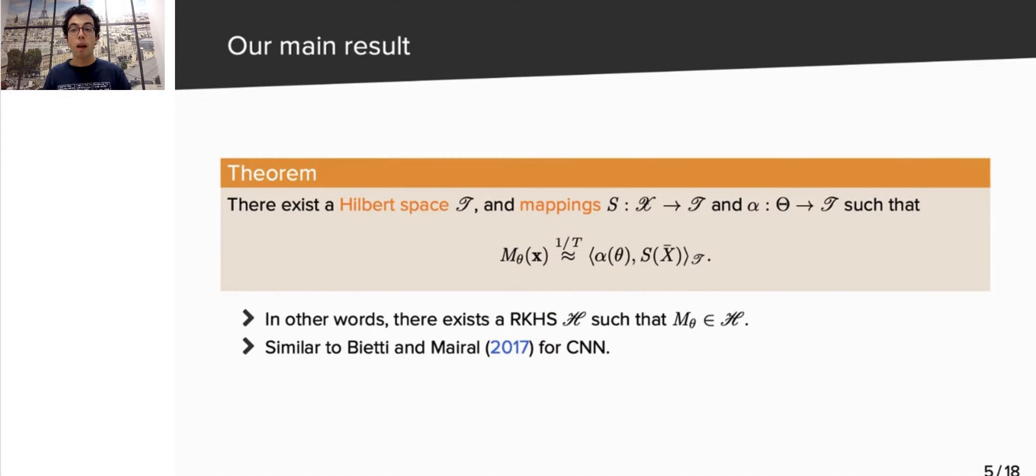We can now state our main results. We showed the existence of a Hilbert space T, and of two mappings, S and alpha, such that the output of the discrete RNN is approximately equal to a scalar product in T between alpha of theta and S of X. The 1 over T approximation is simply the Euler error I was mentioning just before.